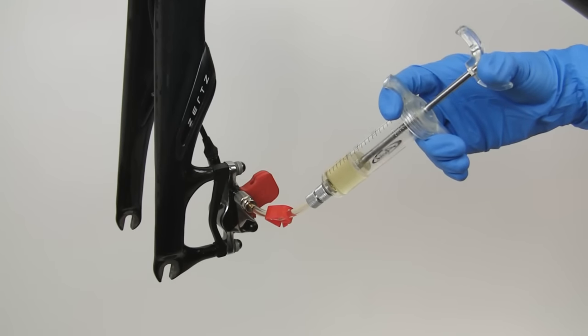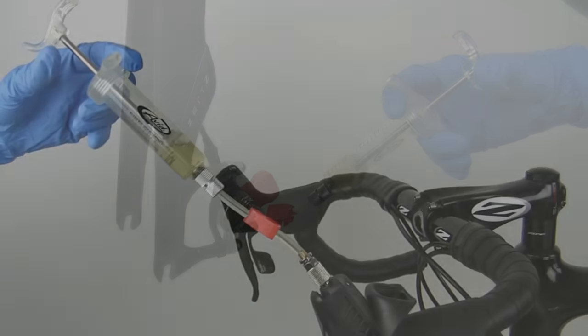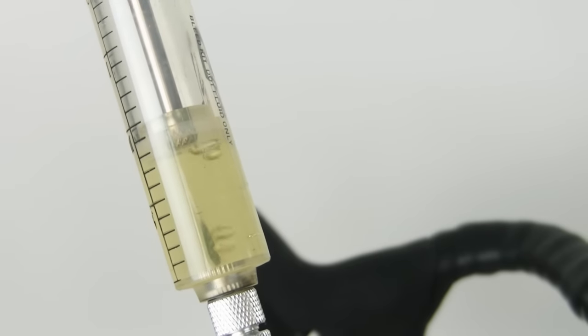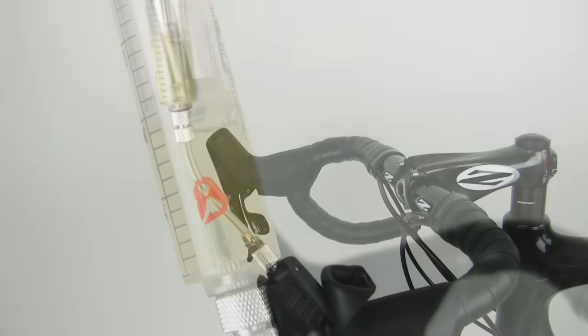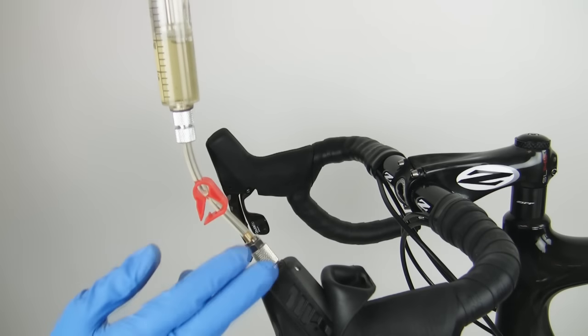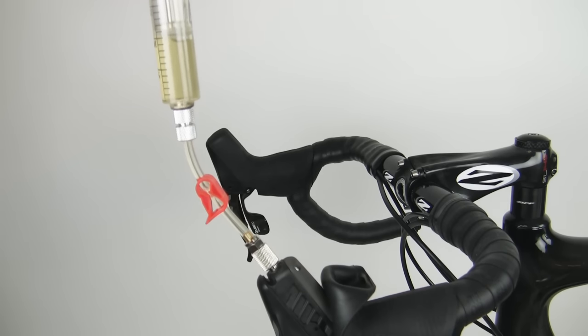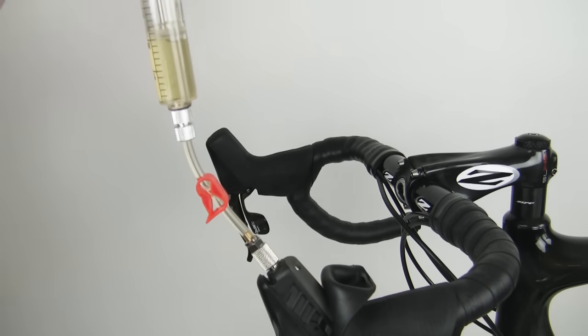Push on the caliper syringe plunger to move fluid into the lever syringe until it is half full. You should also see air bubbles fill the lever syringe. Close the clamp on the lever syringe. If the fluid in the lever syringe is severely discolored, replace the fluid in the lever syringe before continuing.